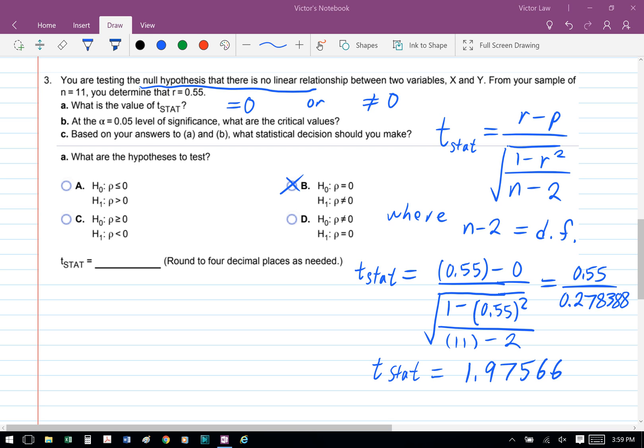To calculate the t statistic, we're going to use the formula r minus phi divided by square root of 1 minus r squared over n minus 2, where the degree of freedom equals n minus 2. And then we can substitute the numbers into the formula.